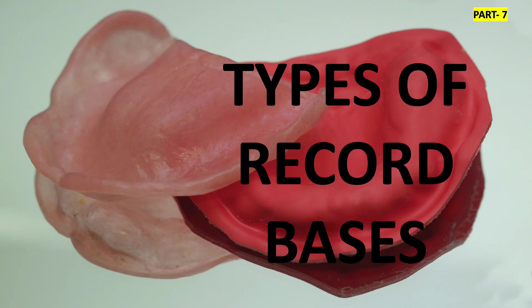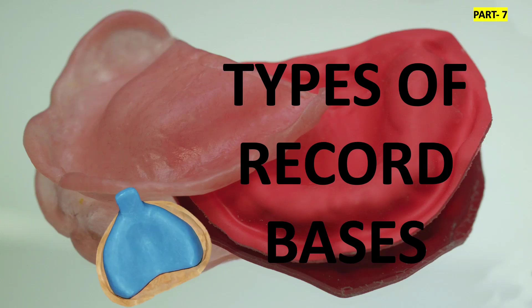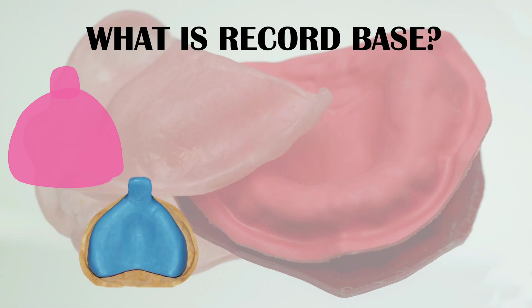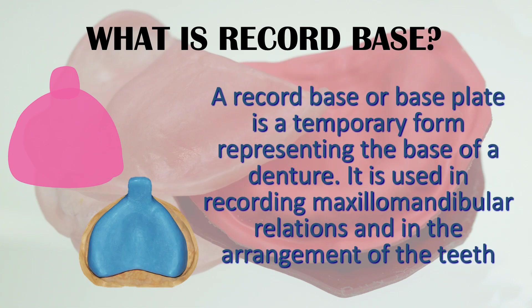Welcome back to Dental Cafe. Today we are going to discuss the types of record bases. A record base, or base plate, is a temporary form representing the base of a denture. It is used in recording maxillomandibular relationships and in the arrangement of teeth. After making a rim, these plates are used for maxillomandibular relationship records and for the arrangement of teeth.